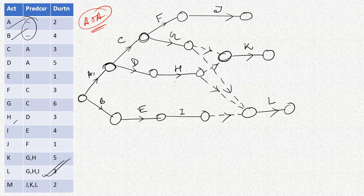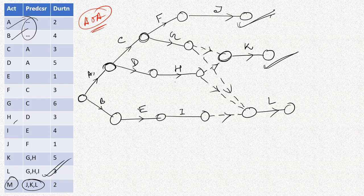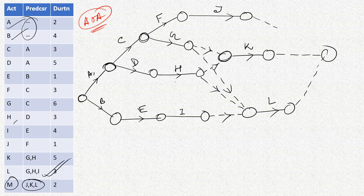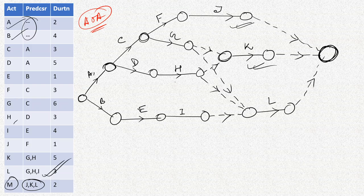Finally, activity M is dependent on J, K, and L. The node representing completion of J, the node for K, and L are joined by dummy activities to a final node representing completion of all three. From this node we start our final activity M. This is how we draw the activity network diagram.